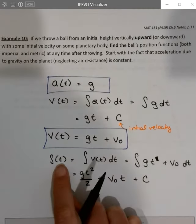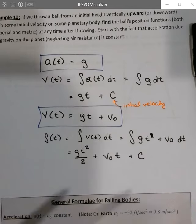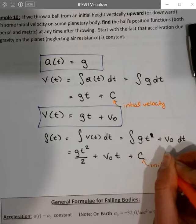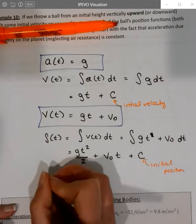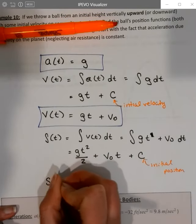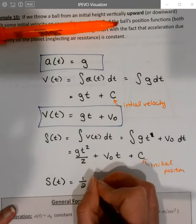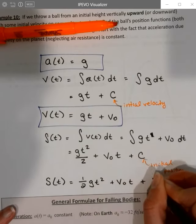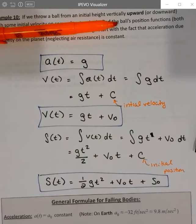Once again, when I plug 0 in to s of t, then these are both going to 0 out. And so what I'm going to get right here is the initial position. So we're going to call that s naught. So if I rewrite this, s of t, instead of writing it as g over t squared, we just call it 1 half g, t squared plus v naught t plus s naught. And we have our position of a falling body function.